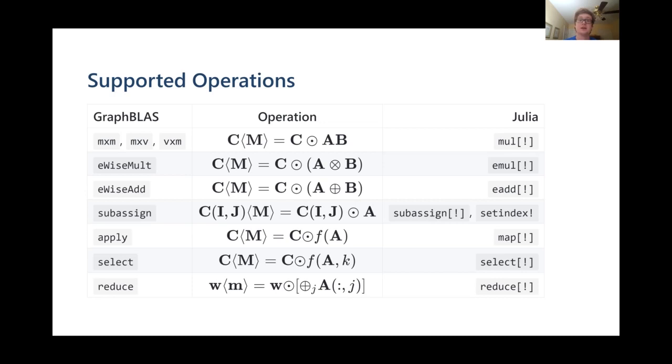The ⊙ is the accumulate operator, which allows us to accumulate the results of the computation into the output matrix C, should there already be results there. While the scalar operators are generalized, these functions are otherwise the same map, multiply, reduce that we know today.